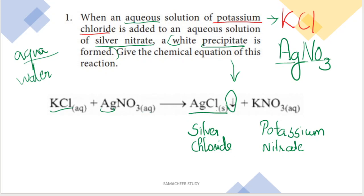AQS solution means aqueous solution — that is, dissolved in water. So potassium chloride is added to an aqueous solution of silver nitrate. These two, when added together, form a white precipitate.